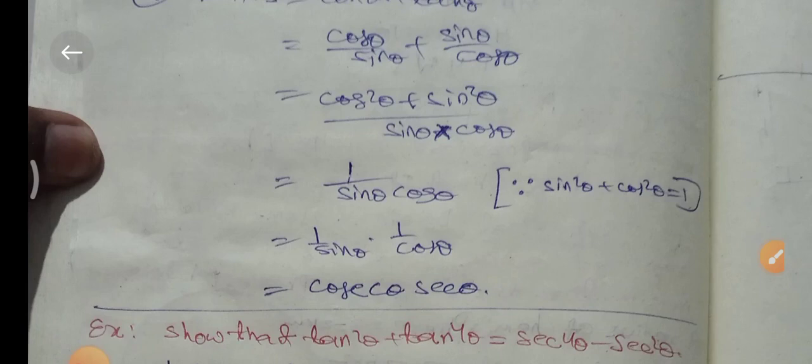This equals 1 over sin θ cos θ, because sin²θ plus cos²θ is equal to 1. Therefore sin²θ plus cos²θ equals 1, so the numerator becomes 1.